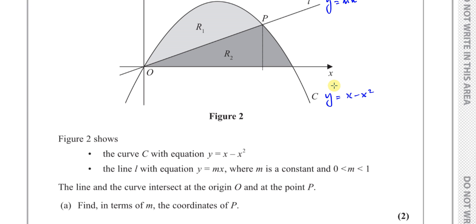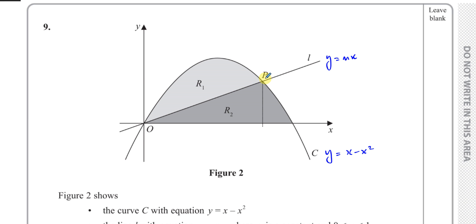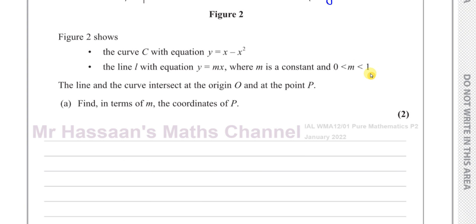I need to find the x and y coordinates of point P, which is where the line and the curve intersect. To find the point where a line and curve intersect, you use simultaneous equations. We have equation 1: y equals x minus x squared, and equation 2: y equals mx.